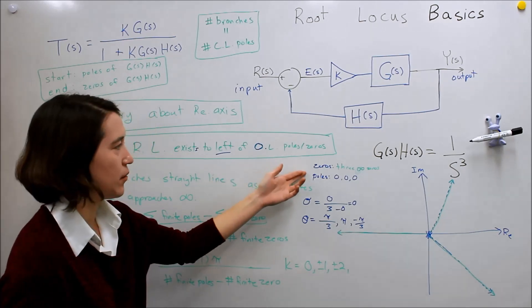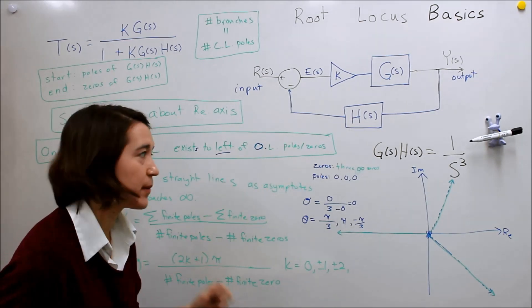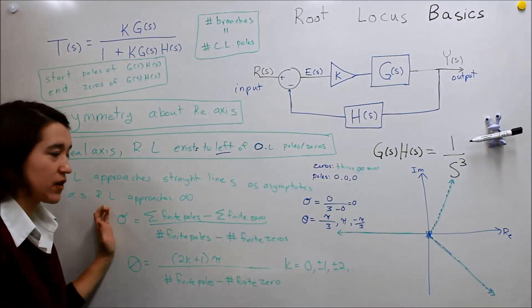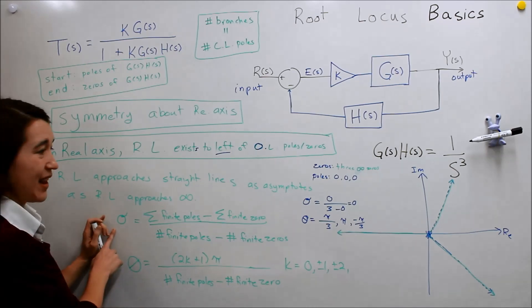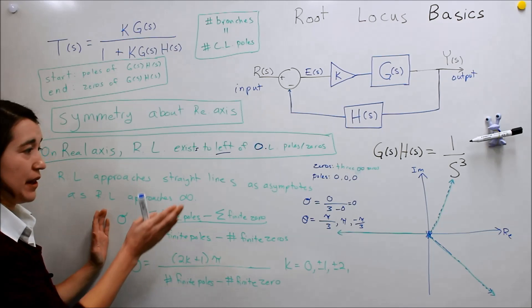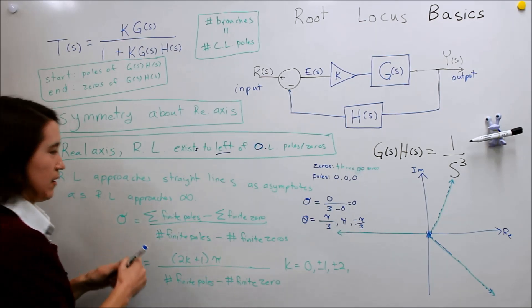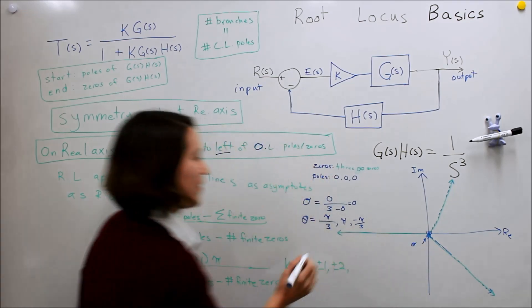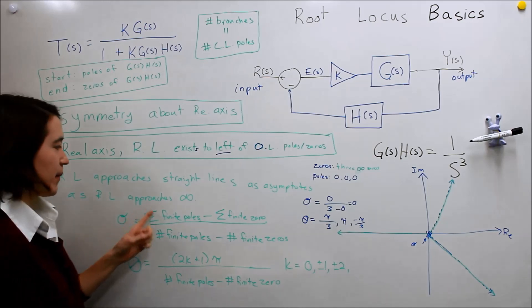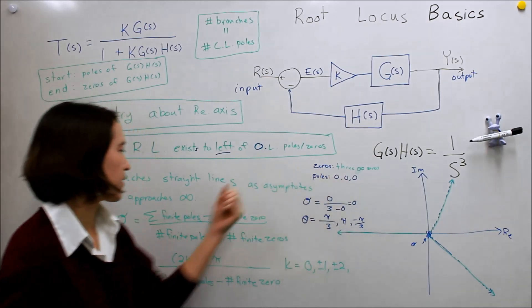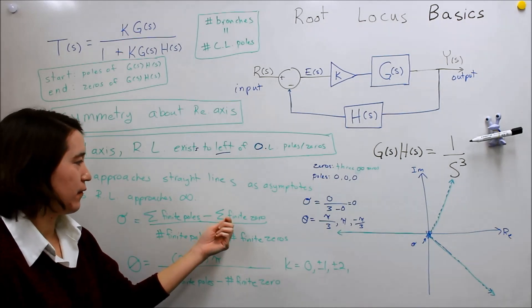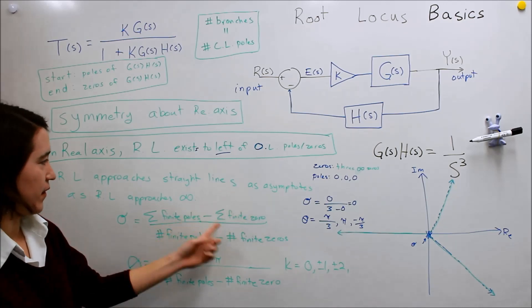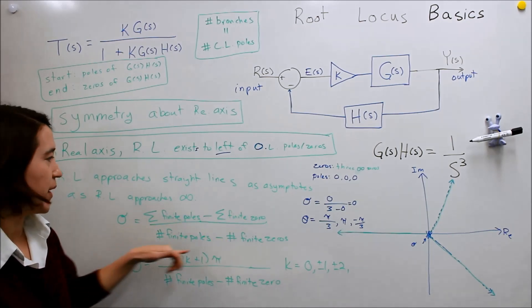We can use the values of the poles, which in this case happen to be all zero. But otherwise they might be other values. You can use these equations, first of all, to find the point that the asymptotes will leave the real axis. So this point is sigma. They're all kind of zeros so it's a little bit hard. And you can find that by looking at the, taking the sum of the finite poles, in this case they're all zeros, subtracting by the values of the finite zeros, or the sum of them all. And then you divide them by the number of finite poles minus the number of finite zeros.